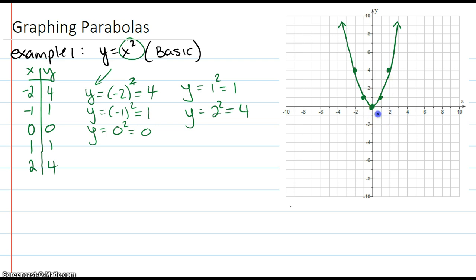By the way, this point right here is called the vertex. When plotting regular parabolas, it's always best to plot the vertex right in the middle. So that point right there, that was the vertex. And notice how I chose the vertex in the middle, 2 on the left and 2 on the right.